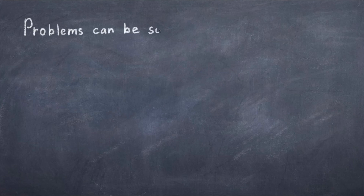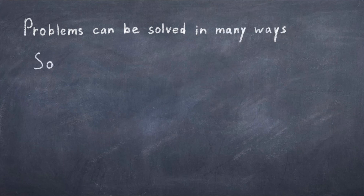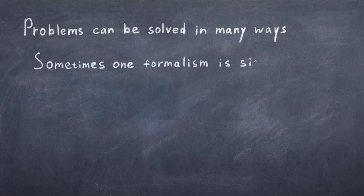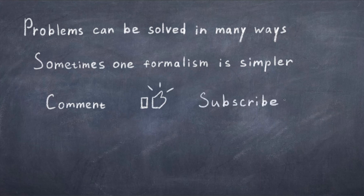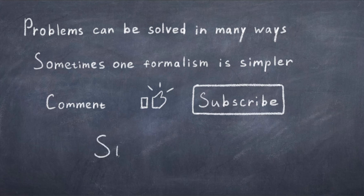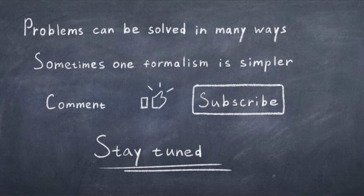In conclusion, problems in classical mechanics can be solved either using the Newtonian formalism or the Lagrangian formalism. Depending on the situation, one method might be easier than the other. There are also other formalisms one can use, but the Lagrangian formalism is one of the most important. We will later in quantum mechanics be introduced to the Hamiltonian, which comes from the Hamiltonian formalism. But let's stop here for today — it was quite technical already. I hope you learned something. Feel free to comment, like and subscribe, and stay tuned for more.